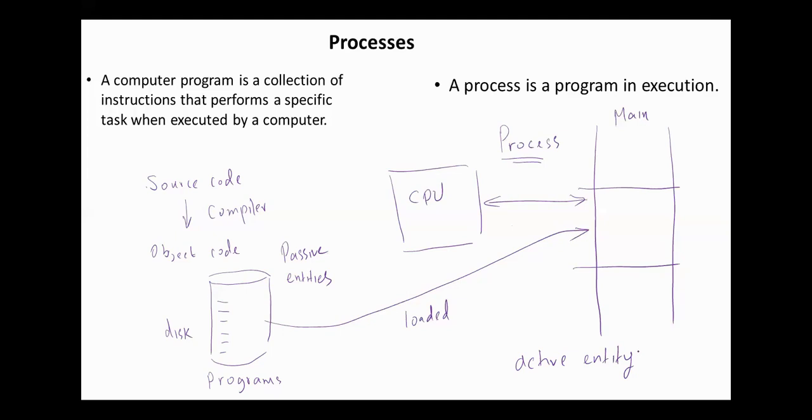One program may generate more than one process. Again, if the source code or the object code is stored on a disk, it's considered a program. But after loading it and starting executing it, it becomes a process.